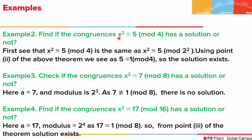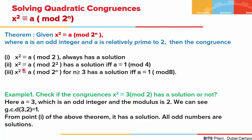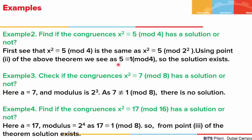The second example is x squared is congruent to 5 mod of 4. Here a is 5, and the modulus is 4, which is 2 squared. So we apply the second point: a solution exists when the residue is congruent to 1 mod of 4. Since 5 is congruent to 1 mod 4, the solution exists.